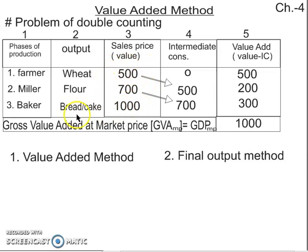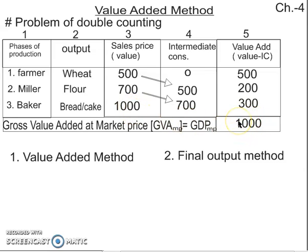In the final output method, we do not count intermediate products. We only look at what the final product is — for example, the baker made bread for 1,000 rupees. We take only that final product value. This is our final output method.